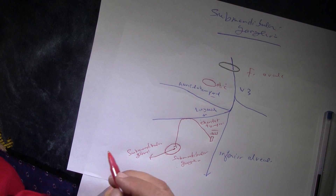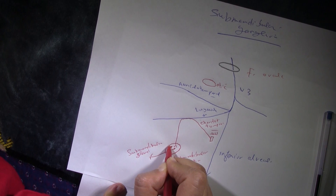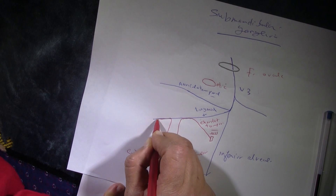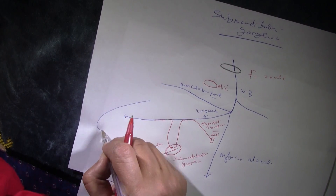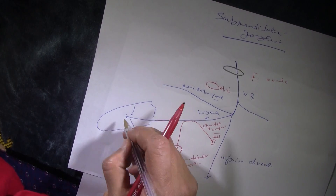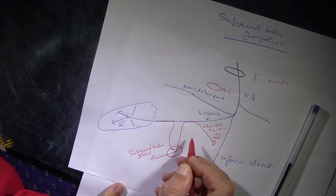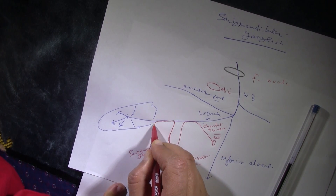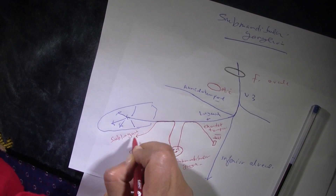The fibers going to the sublingual gland travel back along the lingual nerve. The lingual nerve goes to the anterior two-thirds of the tongue, and the postganglionic fibers rejoin the lingual nerve until they reach the sublingual gland.